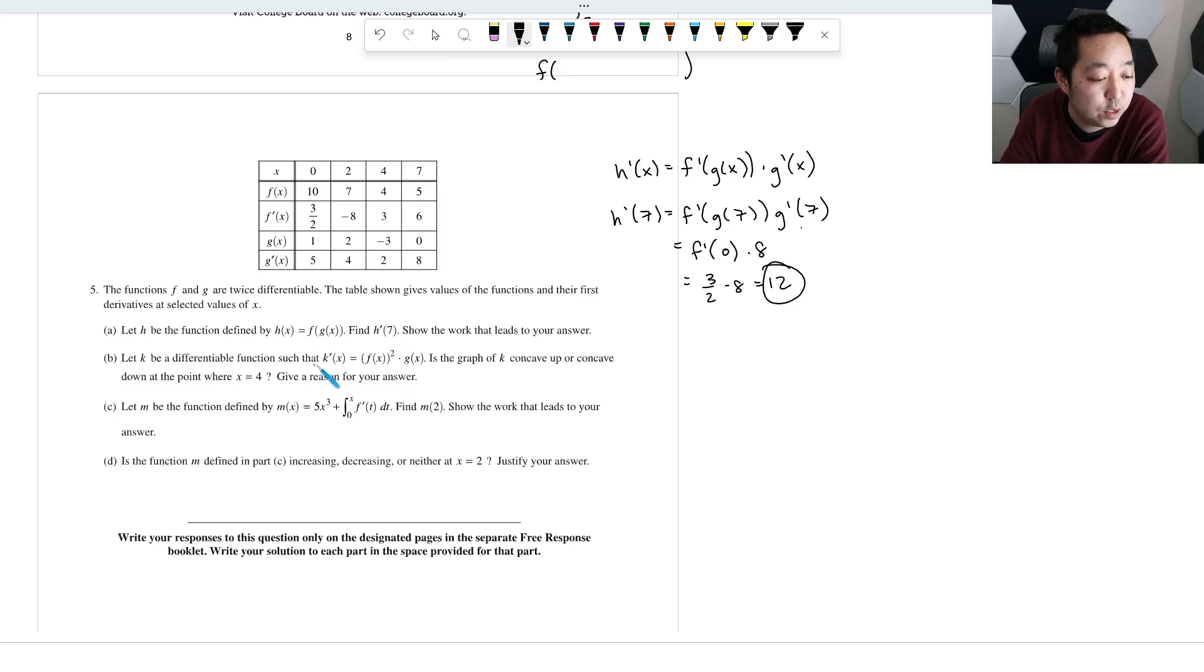Let k be the differentiable function like this. Is the graph k concave up or concave down where x equals 4? Give a reason for your answer. Okay, so this one's a little bit weirder, but basically I want to know the second derivative of this, so I've got to take the derivative of this thing, and if the second derivative is positive or negative, that tells us it's concave up or down.